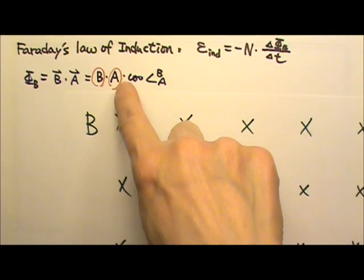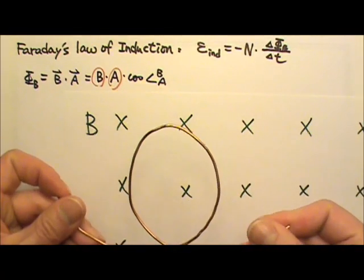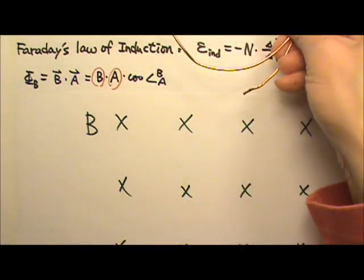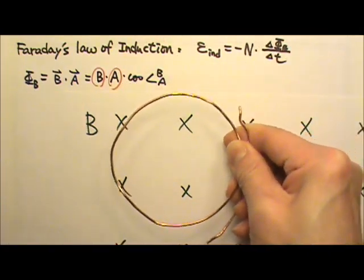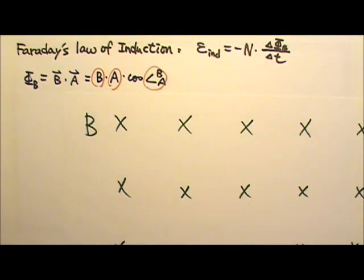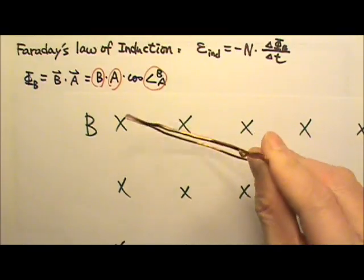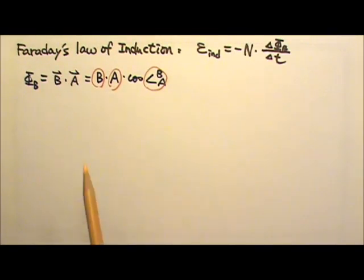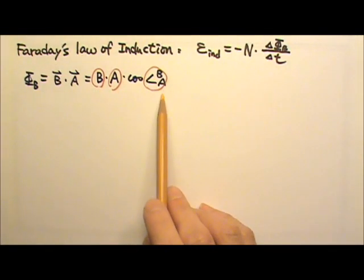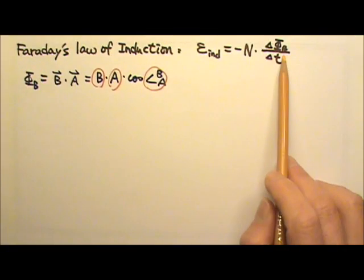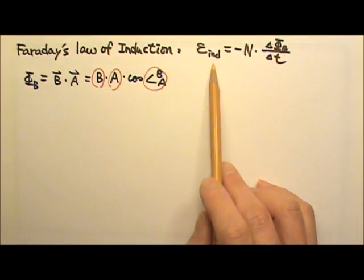We can change the loop area A, or we can push the wire loop into or out of a magnetic field. We can change the angle by rotating a wire loop in a magnetic field. Or we can do a combination of the three. If we can change the magnetic flux, we can produce an induced EMF.